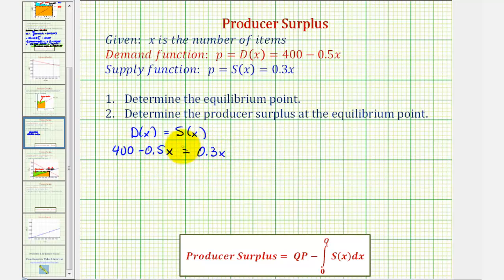So to solve for x, let's add 0.5x to both sides, giving us 400 equals 0.8x. Dividing both sides by 0.8, we have x equals 400 divided by 0.8 or 500.